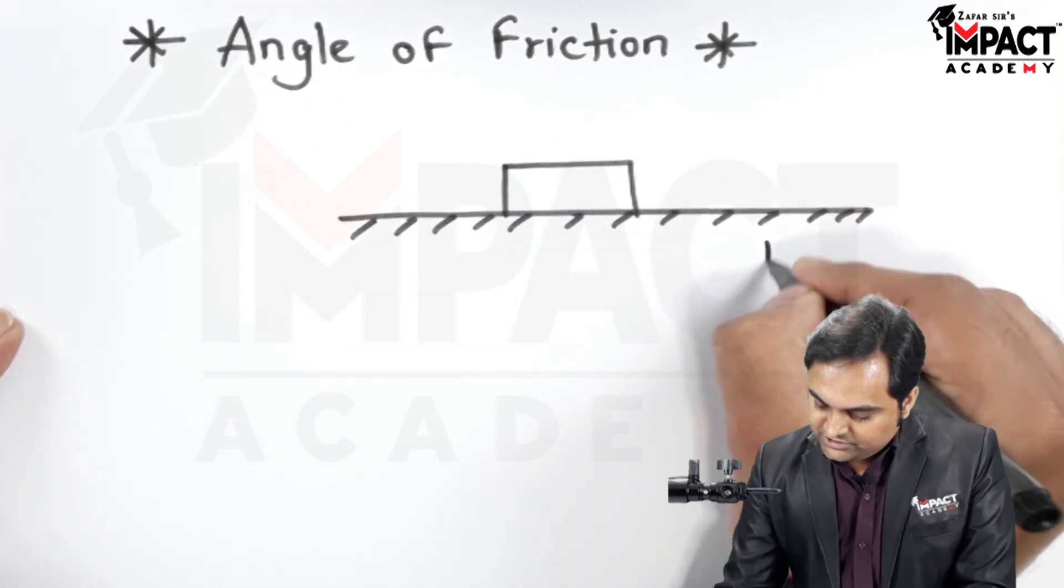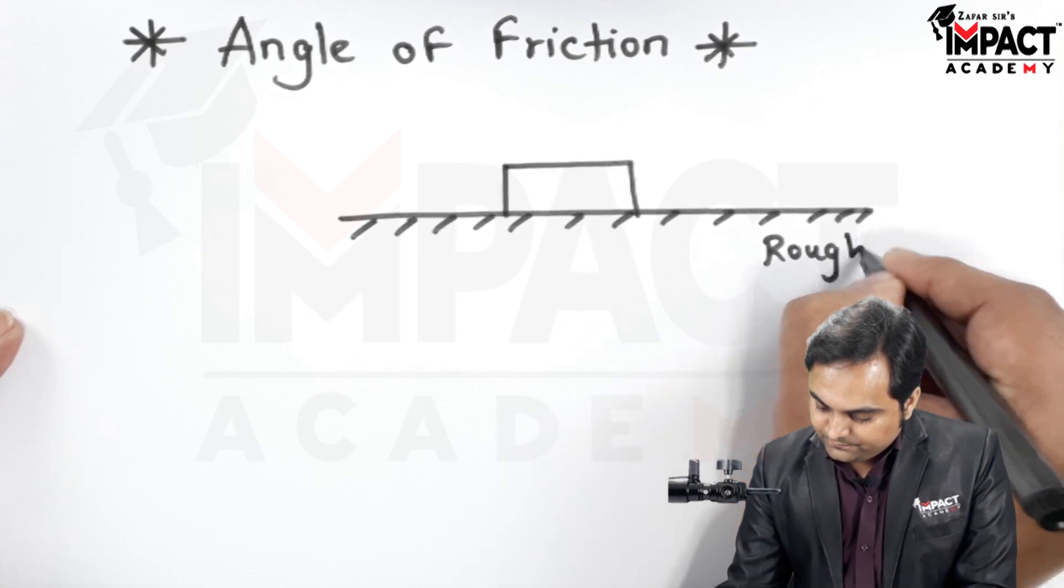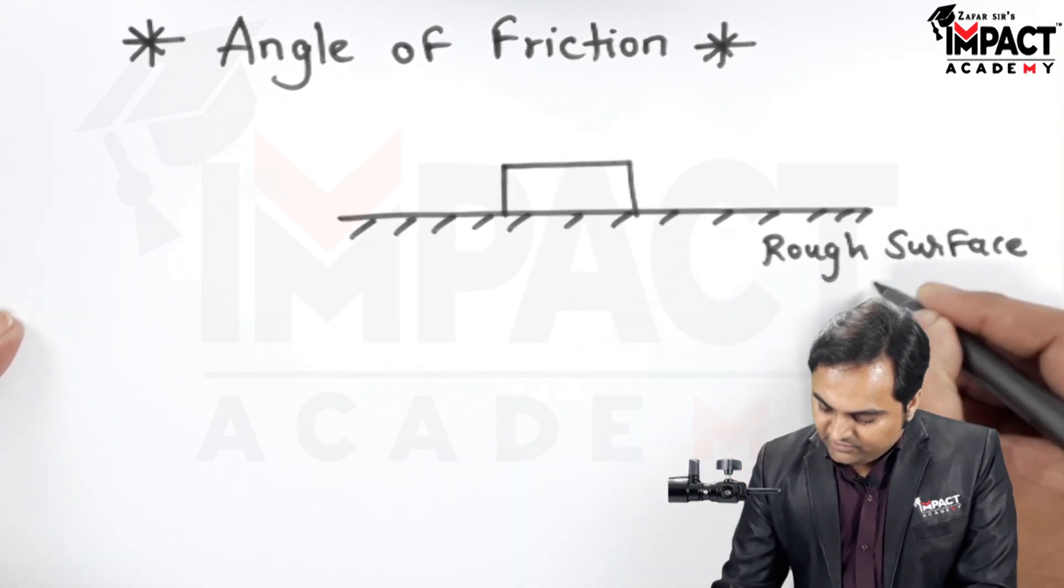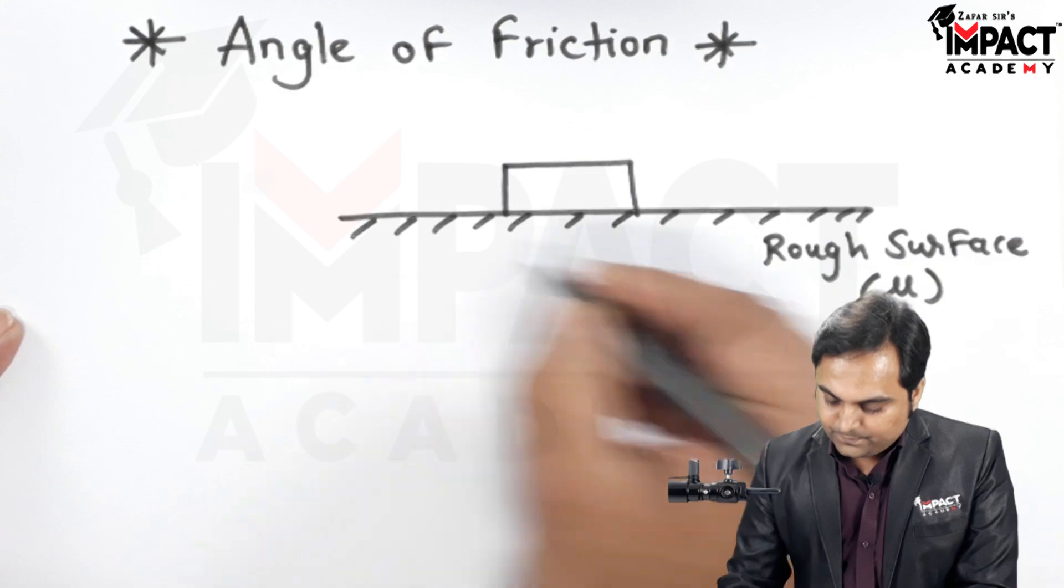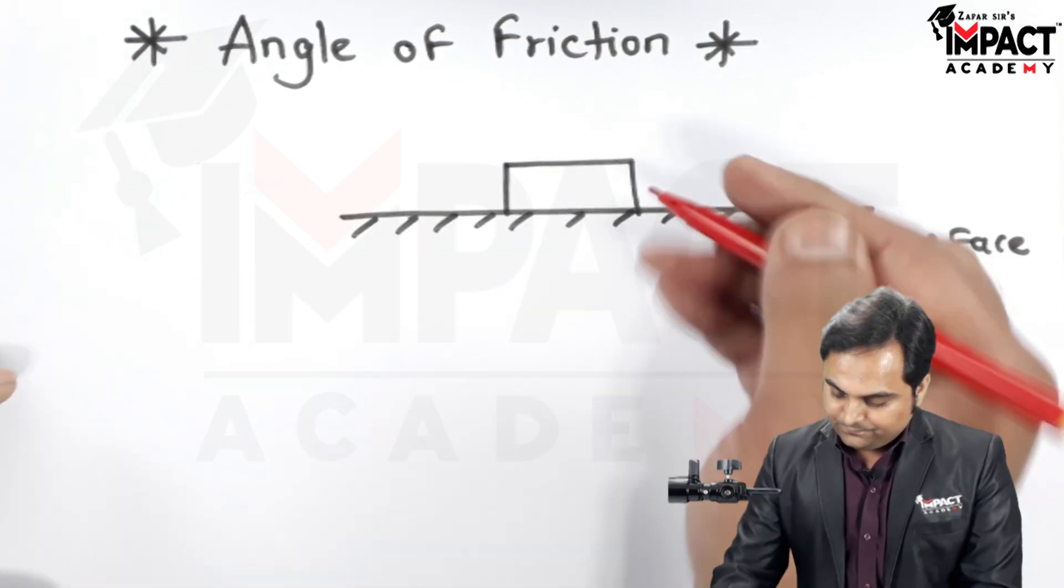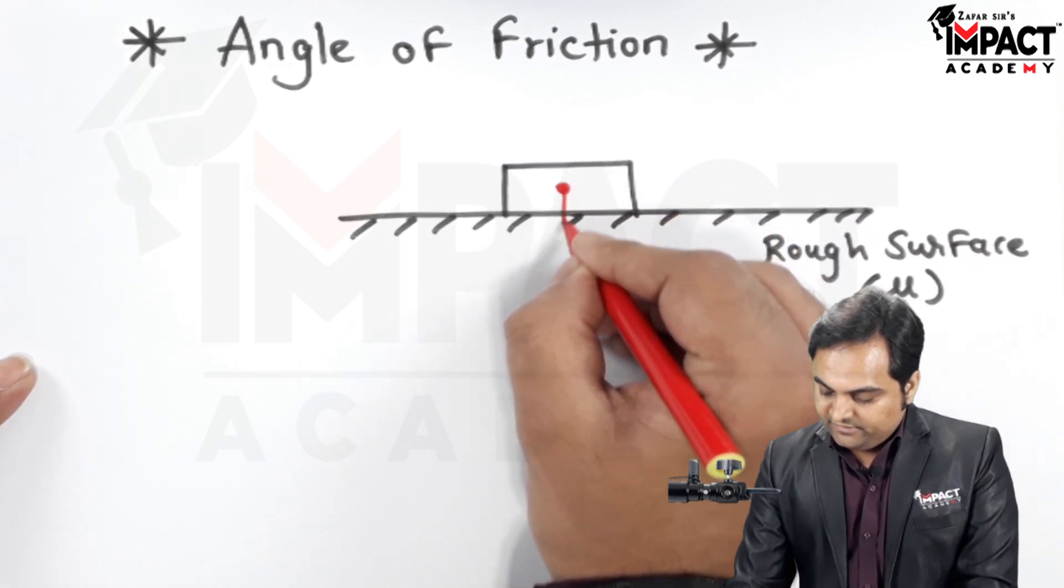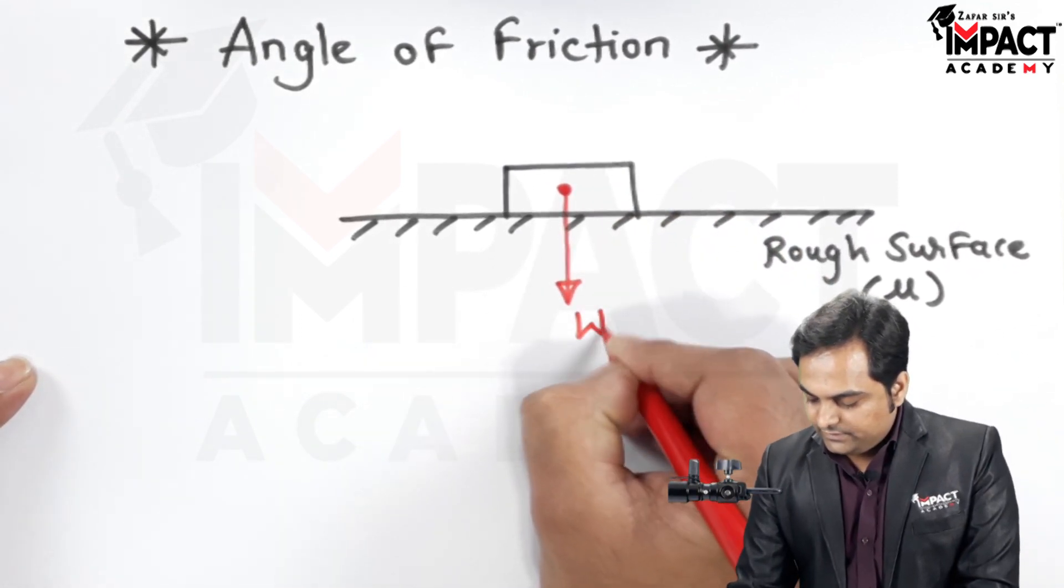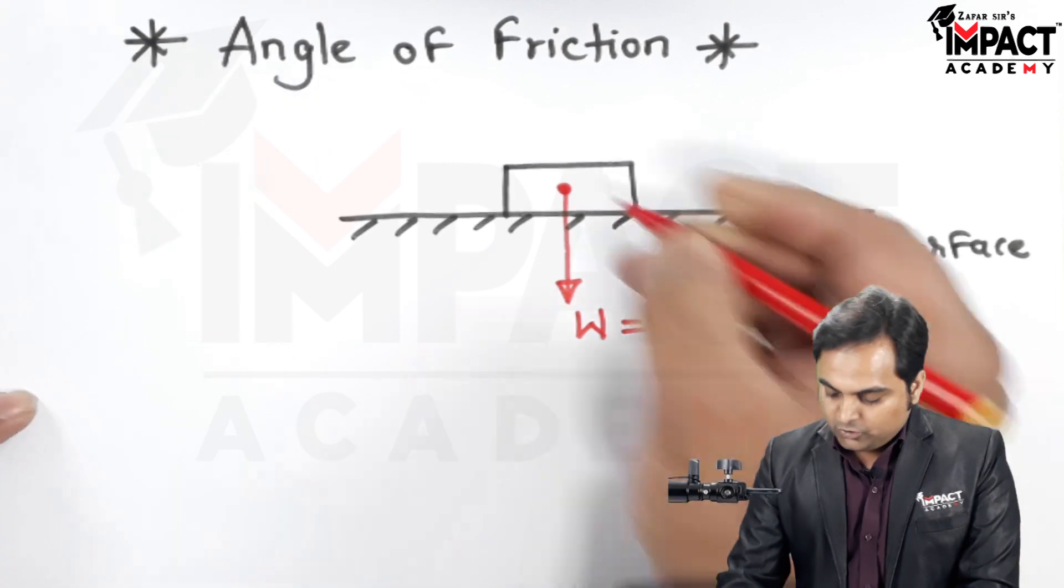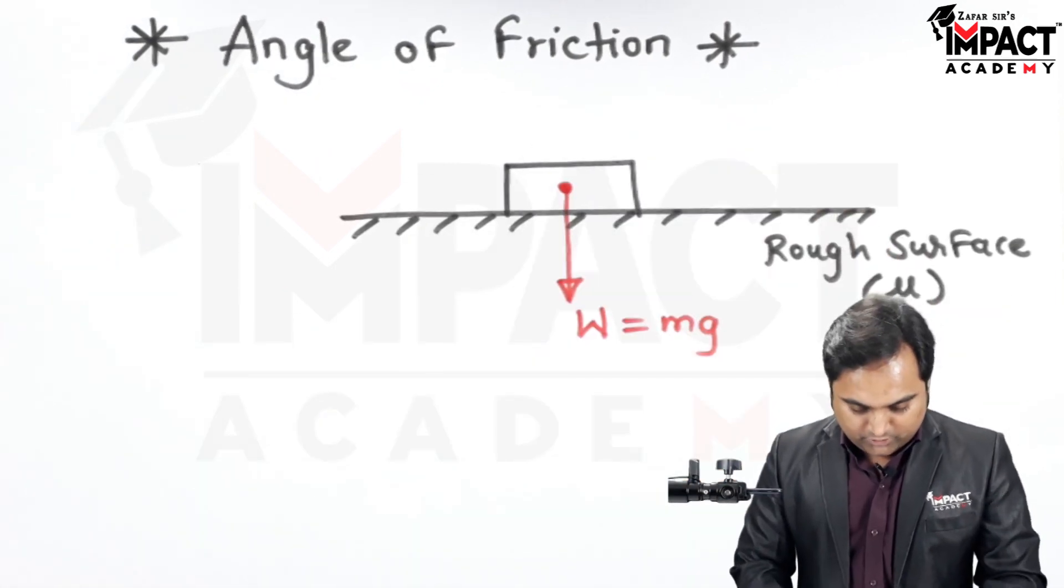Suppose there is a block which is kept on a rough surface having coefficient of friction mu. Then from the CG of this block a weight would be acting in the downward direction.